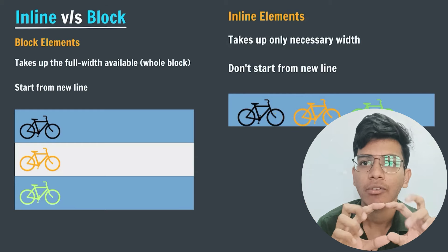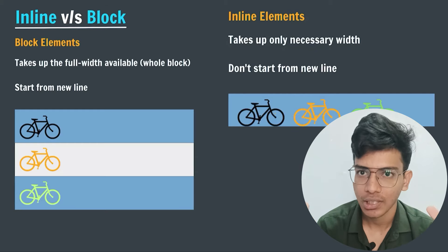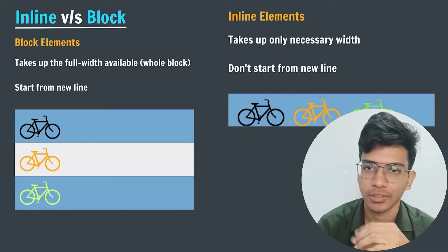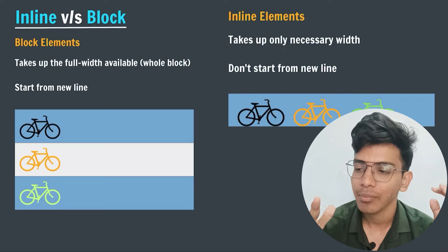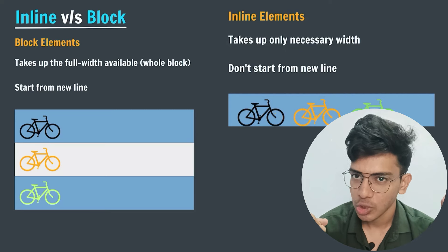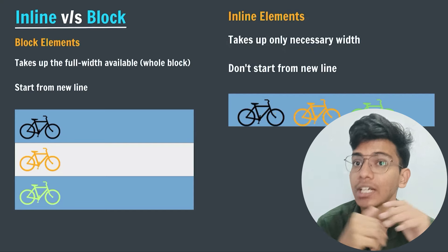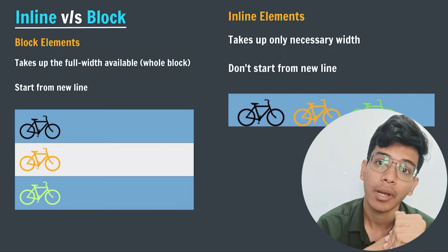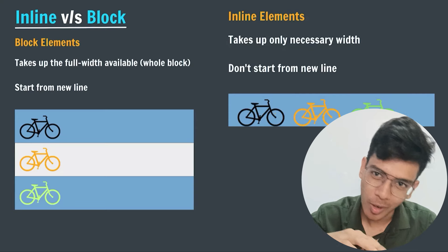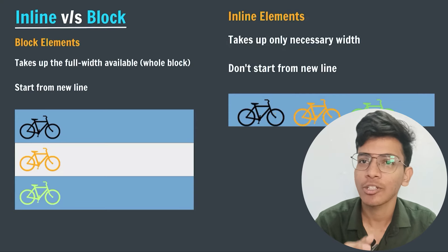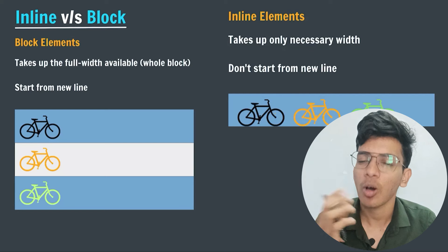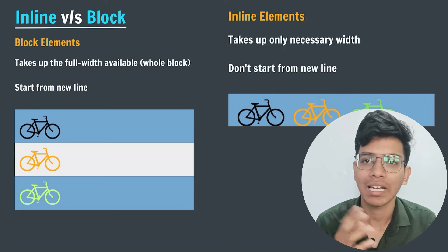In HTML we have different elements, different tags, and these tags can be categorized into two types. Each tag, whatever it might be, can be divided into two types: the first one is inline element and the second one is block element. Let us study in detail what inline elements and block elements are, and what their behavior is.